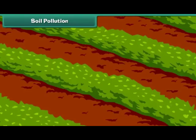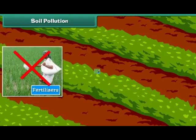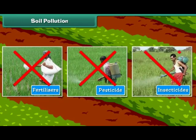We can prevent soil pollution by reducing the usage of fertilizers, pesticides, and insecticides.